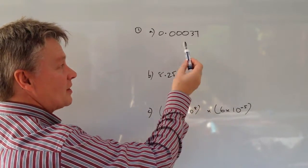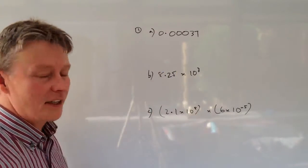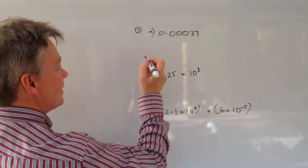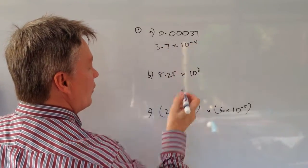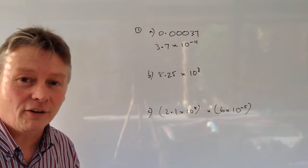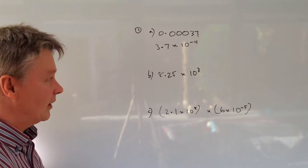So in this particular case the decimal point at the moment is here but we want it over here. So it's actually moved in the negative direction, 3.7 times 10 to the power of minus 4. If you're not sure about this there are a couple of videos on the playlist and you'll be able to have a look at how we've calculated this.